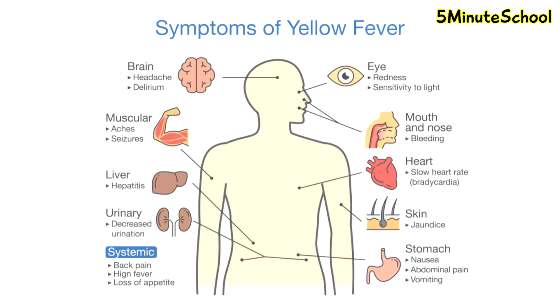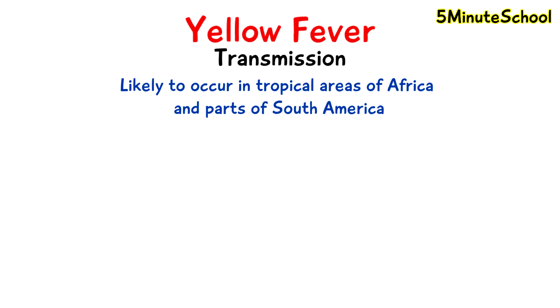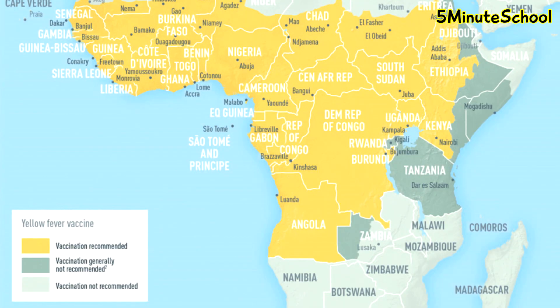The transmission of yellow fever is more likely to occur in tropical areas of Africa. If you look at this picture here, this is a map which shows which areas of Africa it is recommended to have a vaccination for yellow fever before entering, and some of those countries include Kenya, Nigeria, Congo, and Angola.